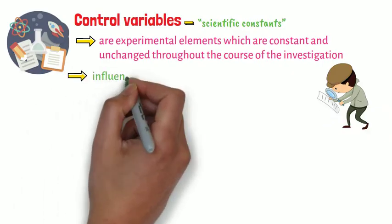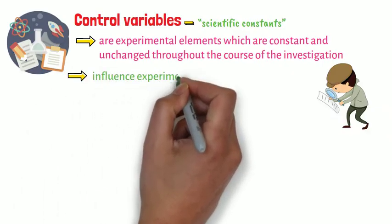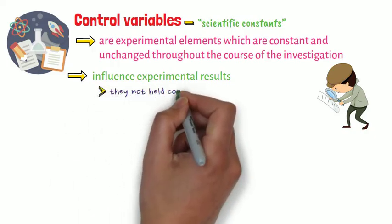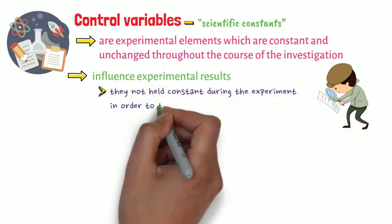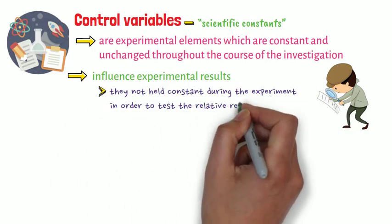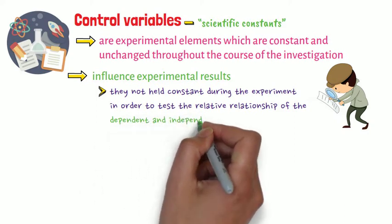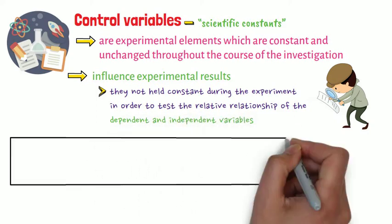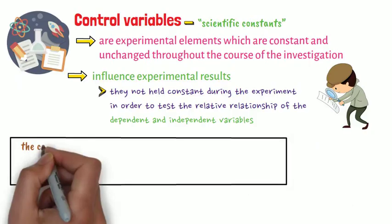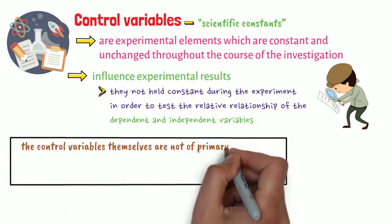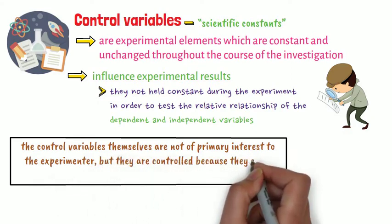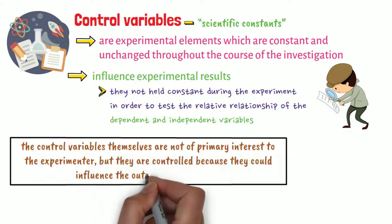Control variables could strongly influence experimental results were they not held constant during the experiment, in order to test the relative relationship of the dependent and independent variables. It is important to note that the control variables themselves are not of primary interest to the experimenter, but they are controlled because they could influence the outcomes of the study.